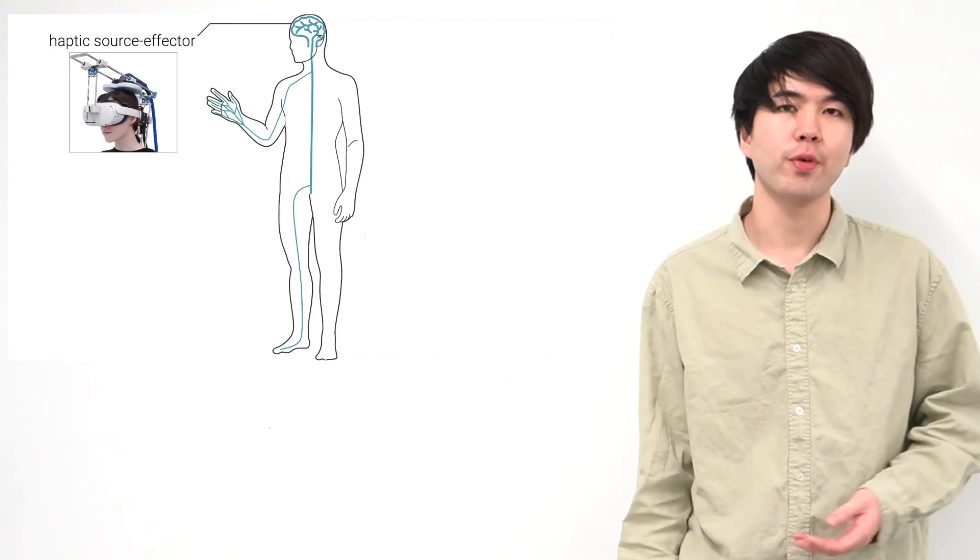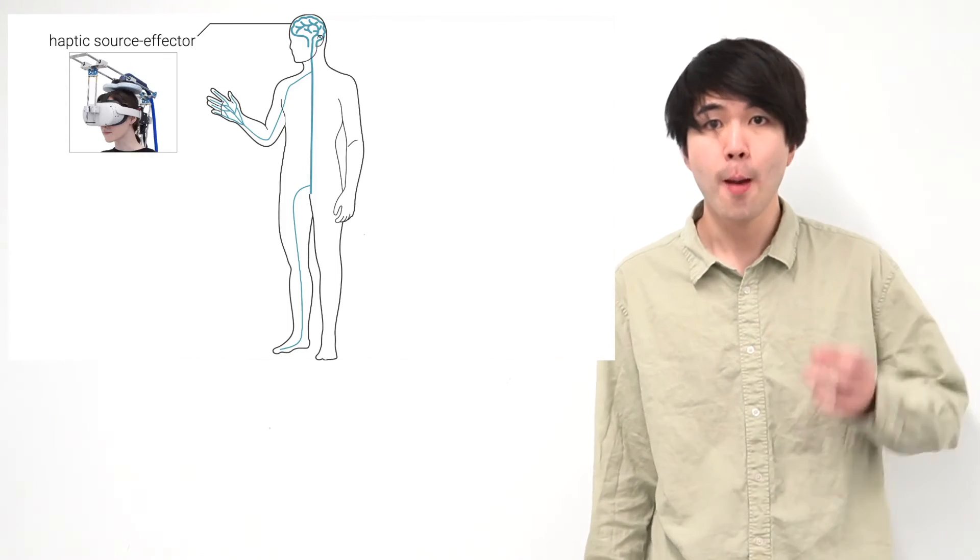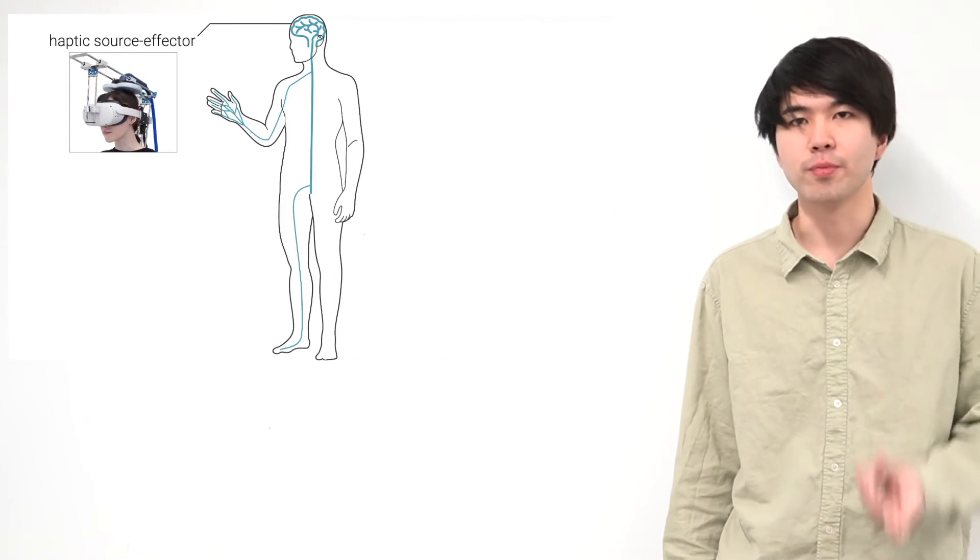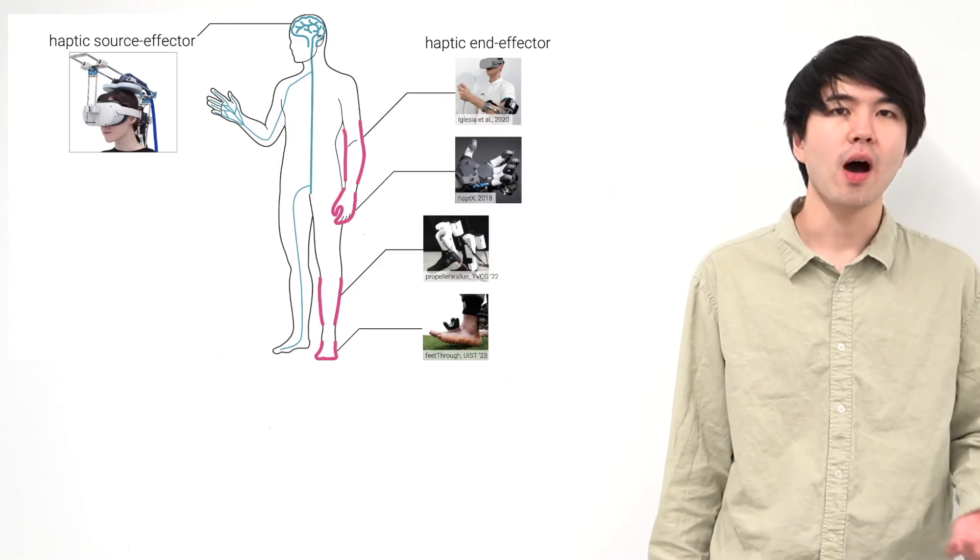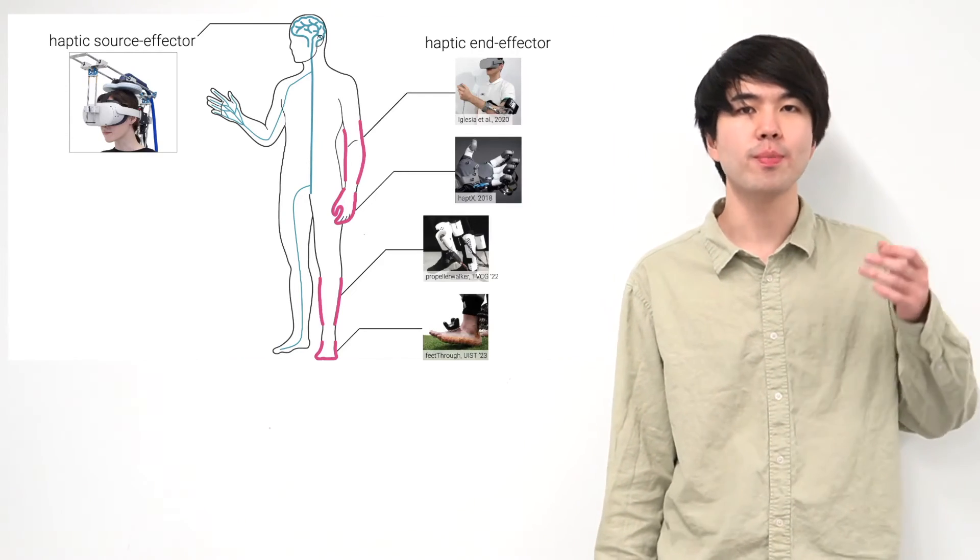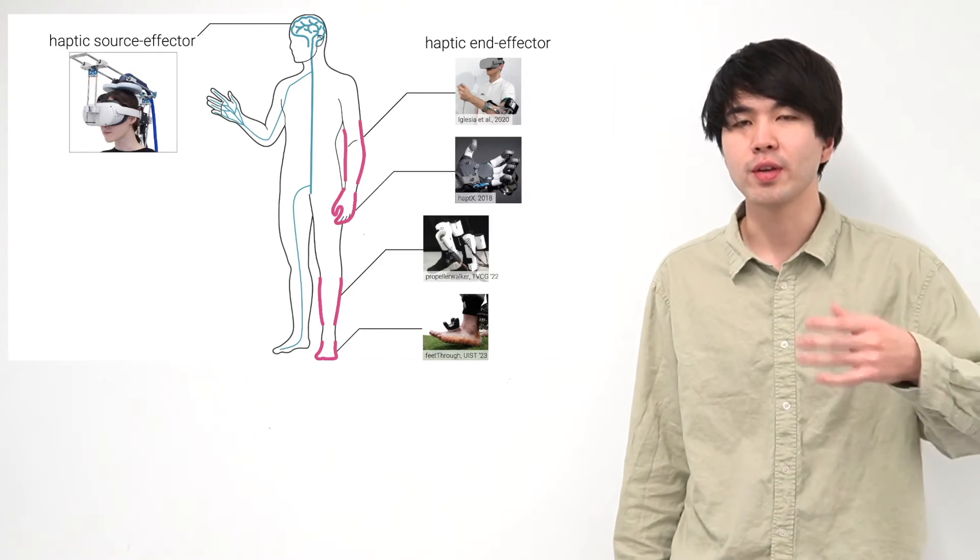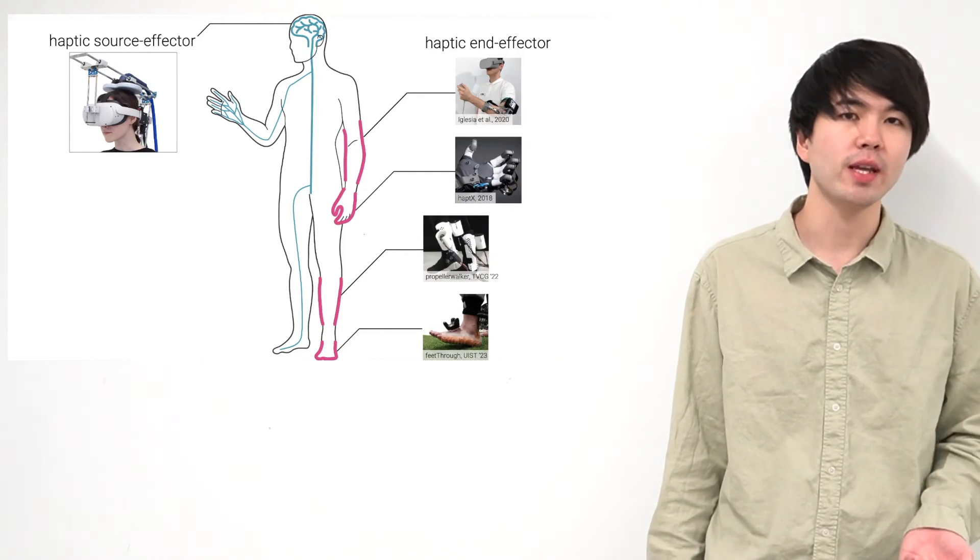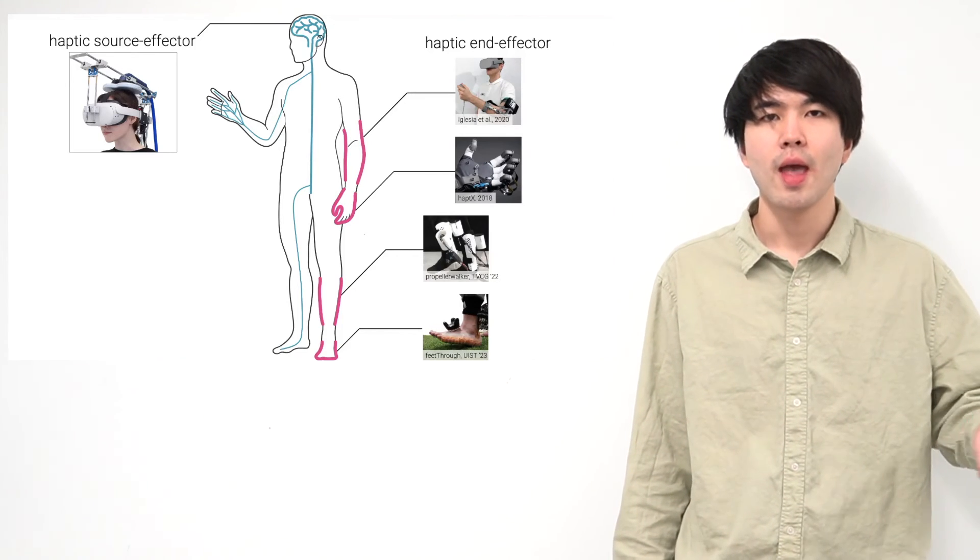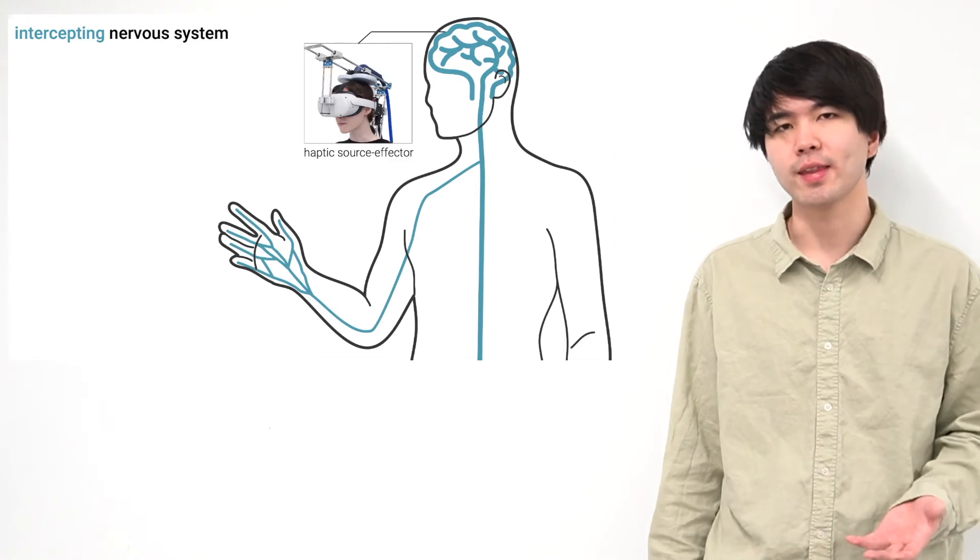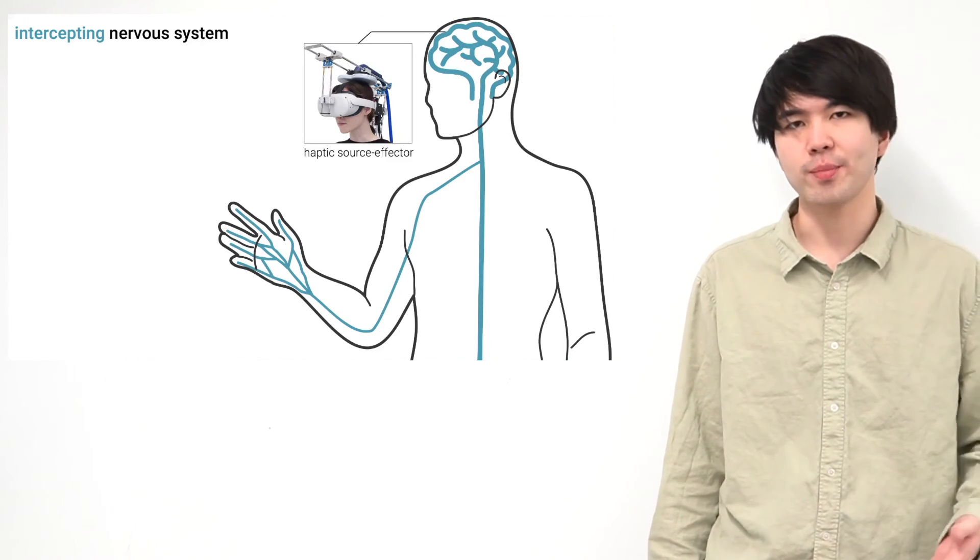All right. So today I proposed Haptic Source Effector, a new concept of creating haptic sensation by directly stimulating the brain. As opposed to conventional haptic end-effectors, our approach allows us to reach many points across the body from a single device only sitting on the user's head without instrumenting users with many devices in different locations.